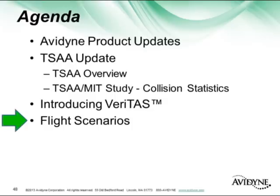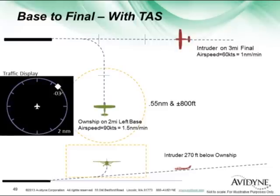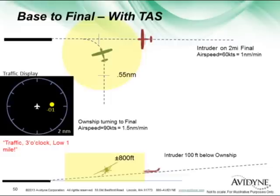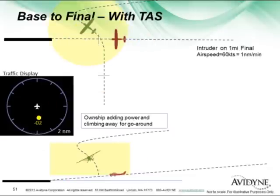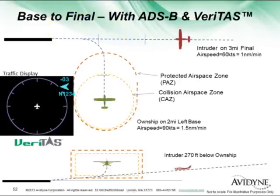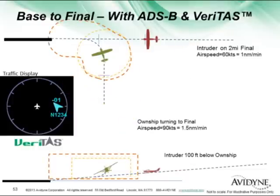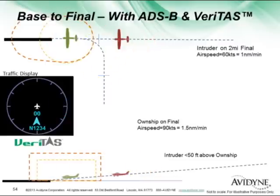Here are a couple of flight scenarios. I'm on a two-mile left base, and there's an intruder aircraft out on a three-mile final. With a TAS or TCAS system, I've got a CAS of 0.55 nautical miles. In this scenario today, I'm going to get a 'traffic three o'clock low, one mile' alert, and I'll probably put the throttle forward, climb, and go around — because I've got an alert and I have to do something about it. With Veritas and ADS-B, I've got a much tighter CAS zone. I'm projecting where I'm going to be in 30 seconds and where he's going to be, and I know there's not going to be a conflict — so I can go ahead and make my approach without the expense and time lost of a nuisance-alert-driven go-around.